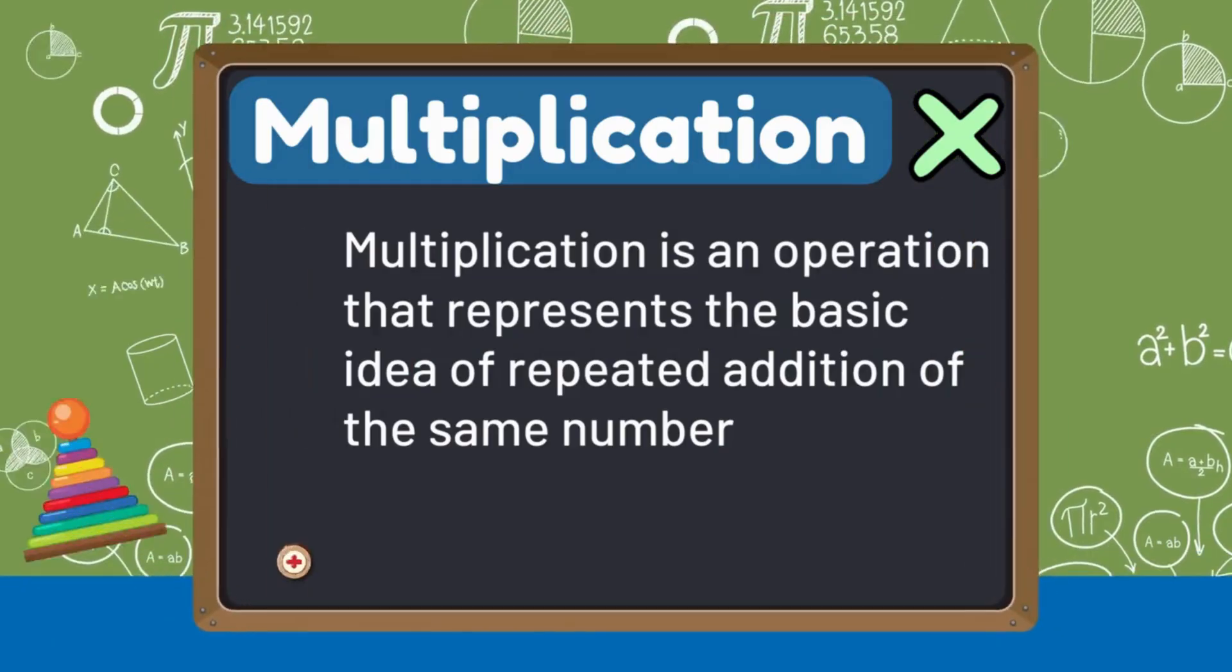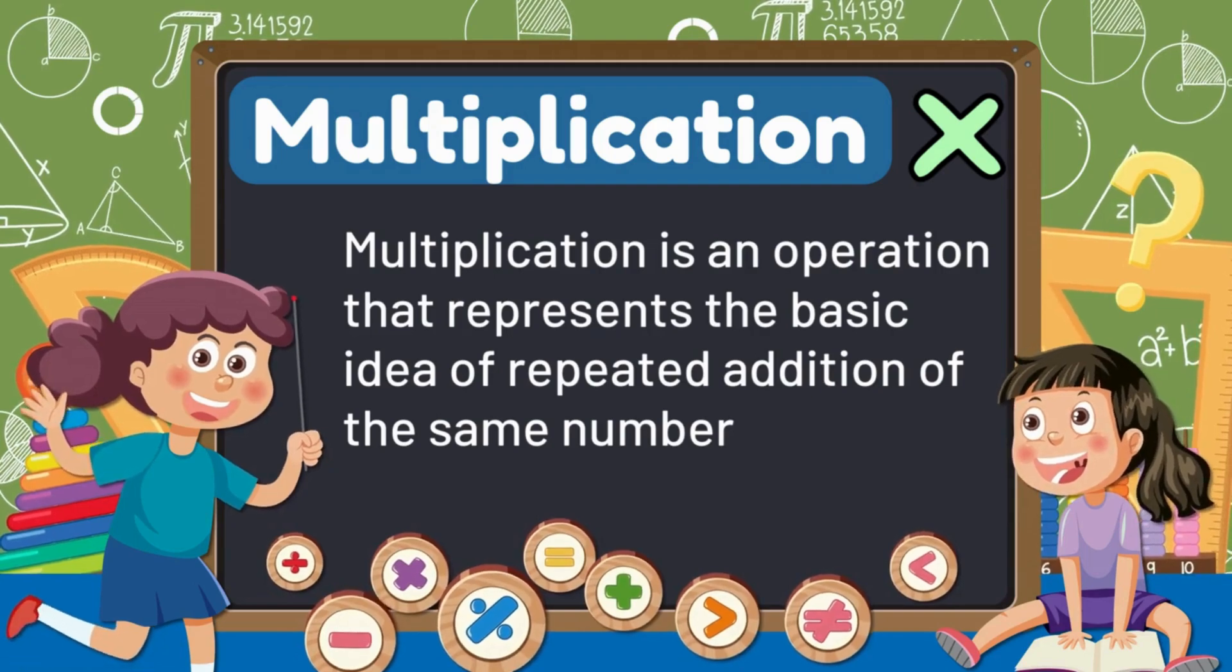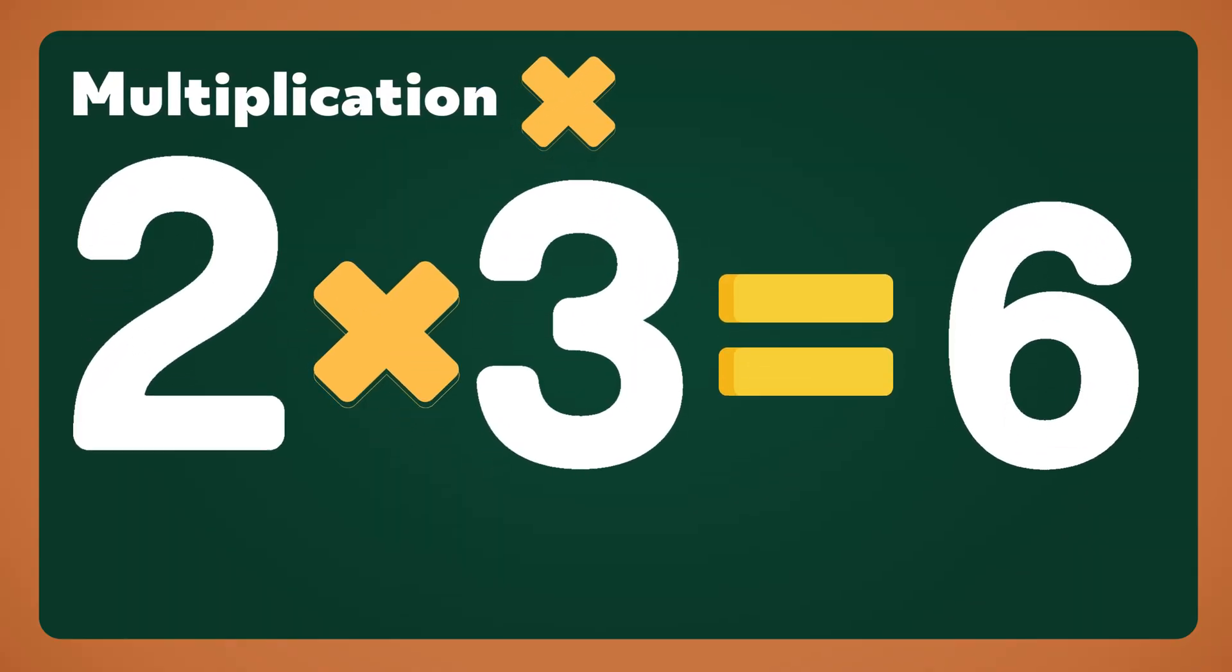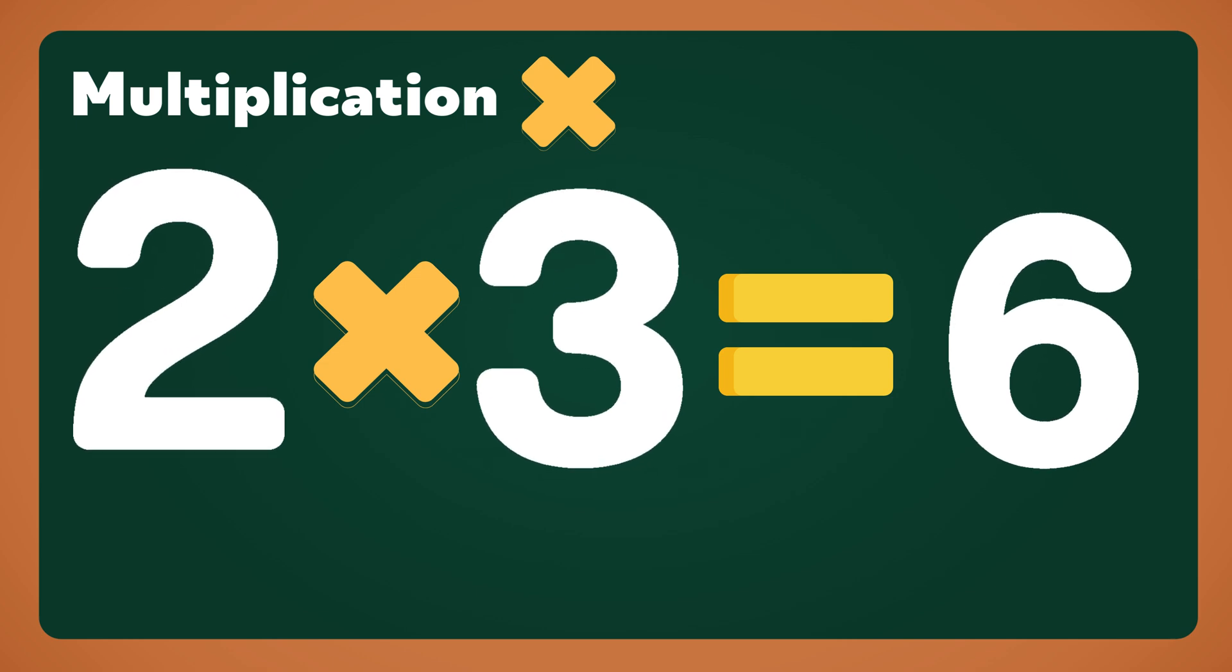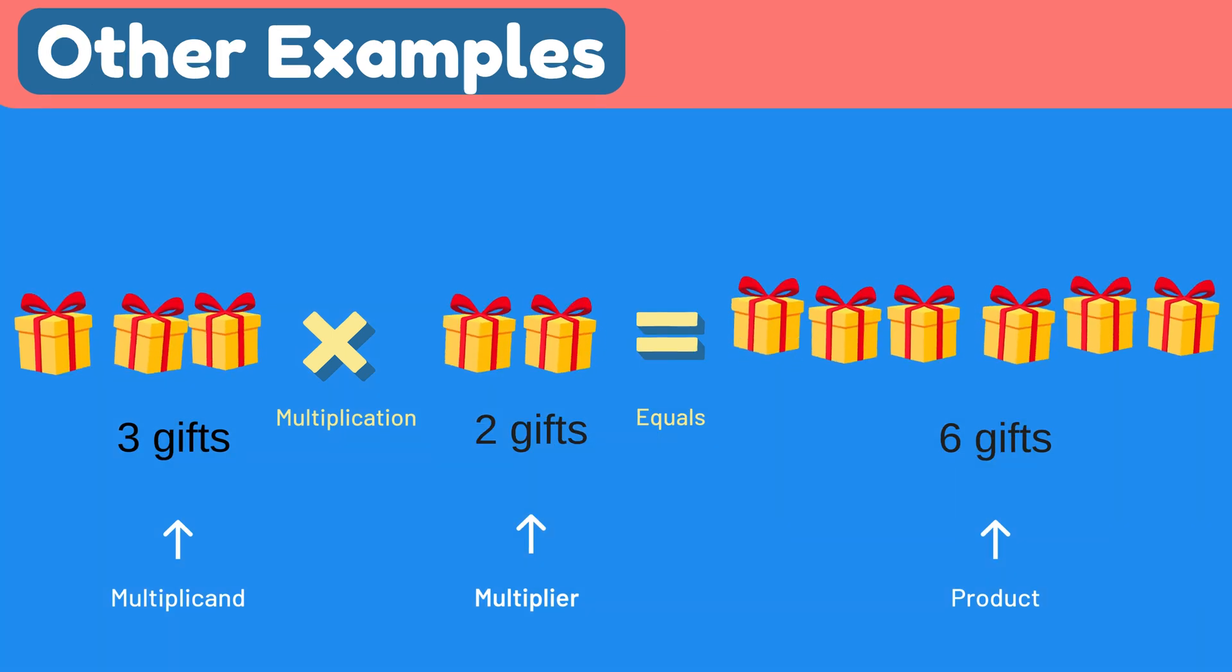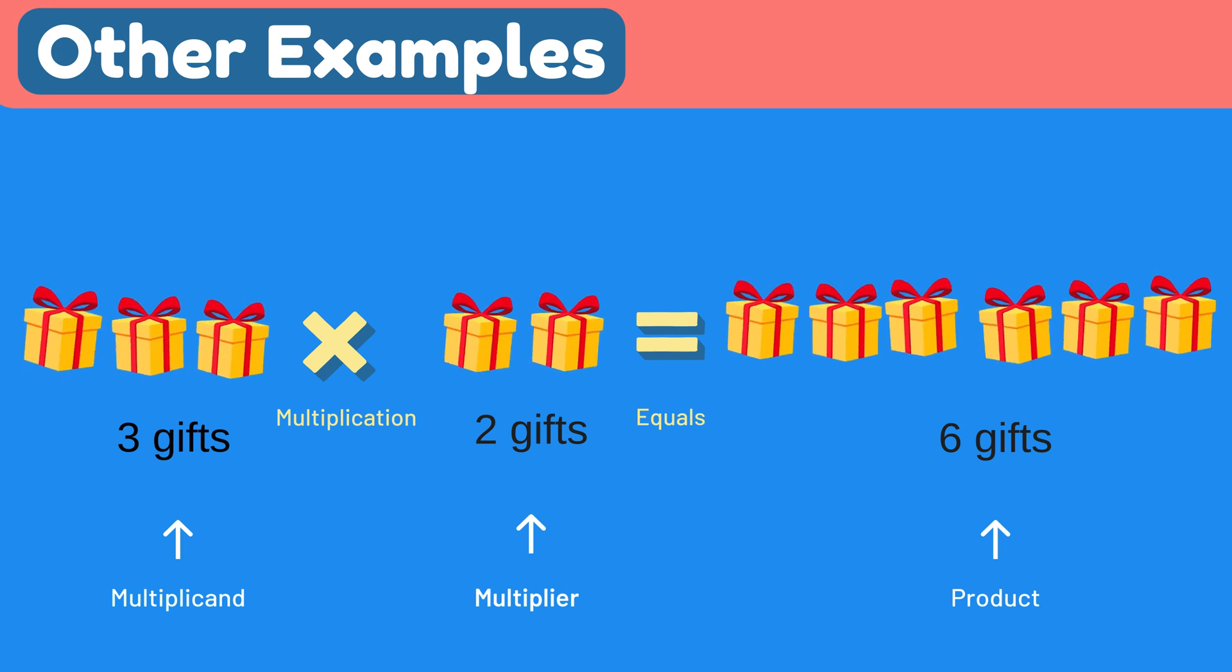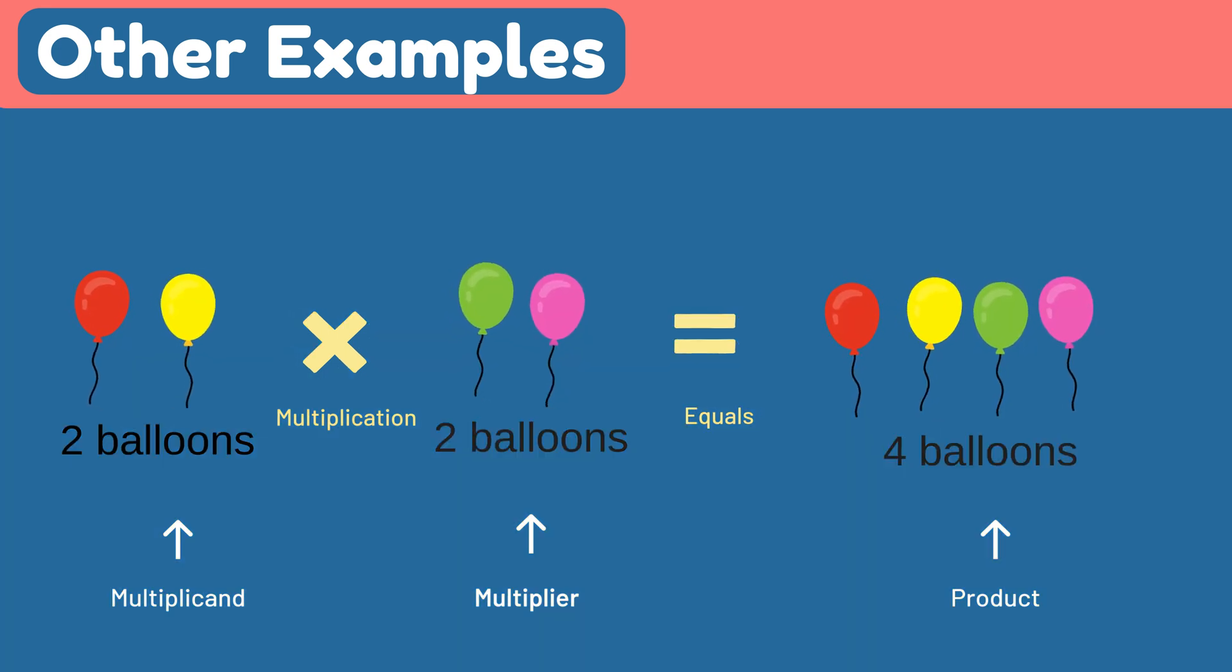Let's multiply! Multiplication is an operation that represents the basic idea of repeated addition of the same number. Faster writing saves the day. Multiplying two cakes times one cake equals two cakes, twice the cakes, that's so sweet. Multiplying three gifts times two gifts equals six gifts, multiplication makes it neat. Multiplying two balloons times two balloons equals four balloons, counting quick is such a treat.